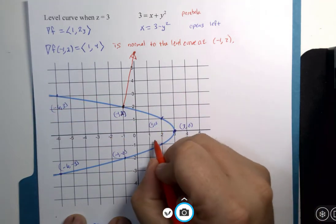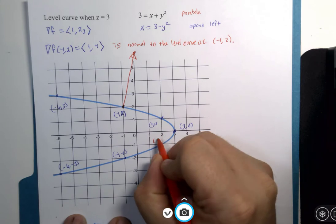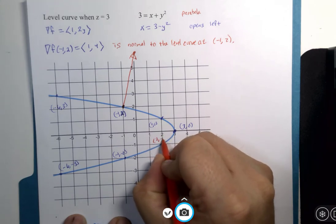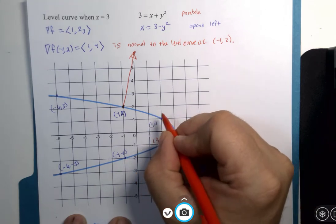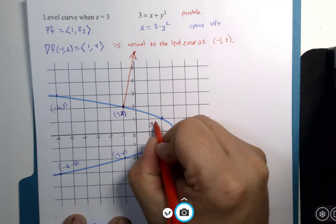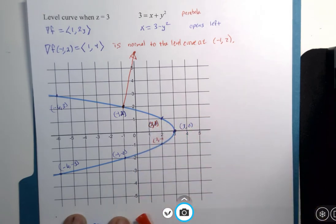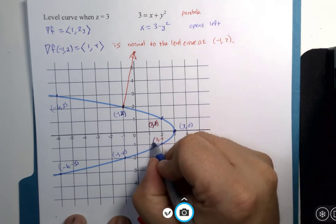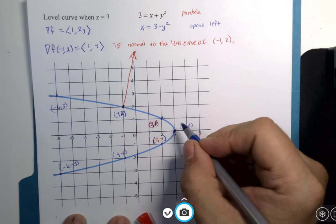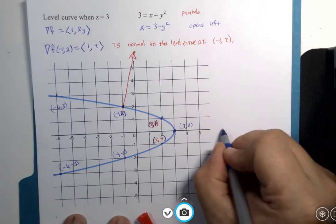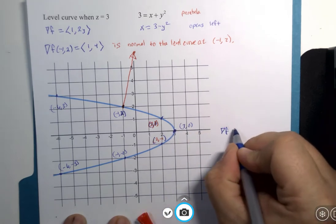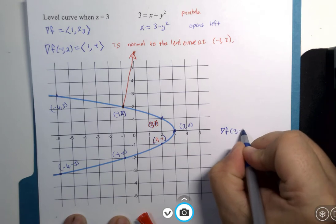If I were to use the point here, 2, negative 1, oh my goodness, look at that, I did a terrible job here. That's the point 2, 1 right there. Better late than never, I guess. So let's say I was going to calculate this gradient at the point 2, negative 1.